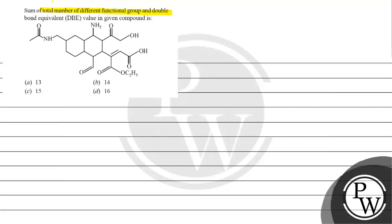Let's read this question. The question says: sum total of different functional groups and double bond equivalent value in the given compound is. The key concept for this question is double bond equivalent.